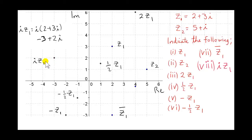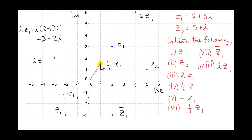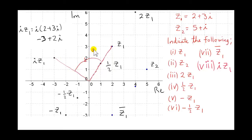A very important point: multiplying a complex number by i rotates it anti-clockwise about the origin. If we draw a line from z1 to the origin and rotate this line anti-clockwise through an angle of 90 degrees about the origin, z1 ends up at this new position.